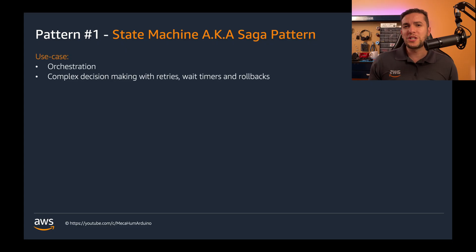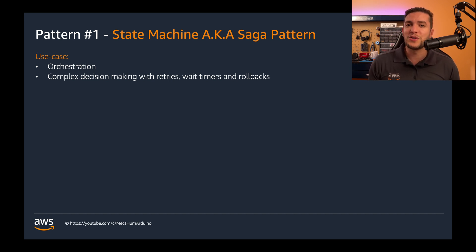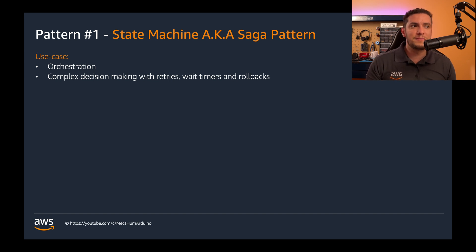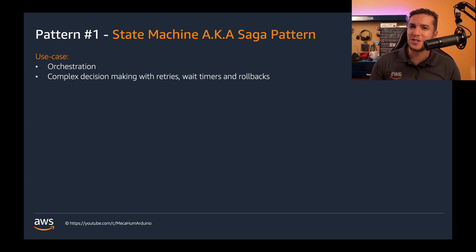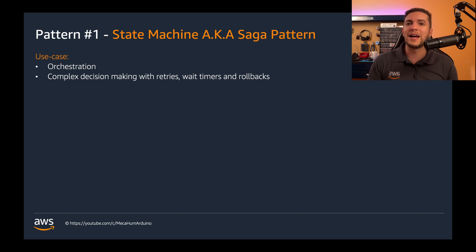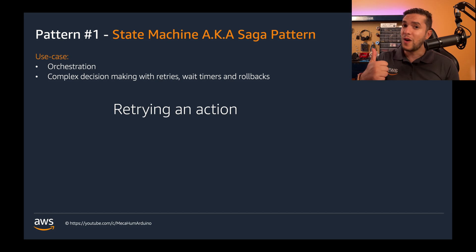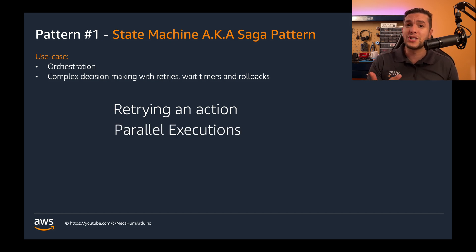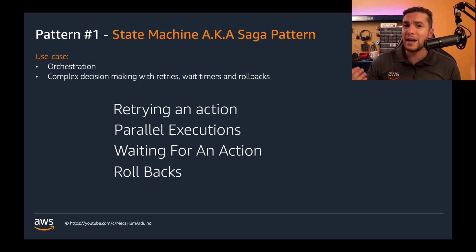The application has to implement all this different logic and decision making, which can be done through Lambda functions — believe me, I tried. But Lambda functions are not the right orchestration mechanism for linking all these decision-making steps together. When you're discussing with your team scenarios that require retrying an action, executing actions in parallel, waiting for a response before moving forward, or rolling back to a previous step — that's when you should look into the saga pattern.